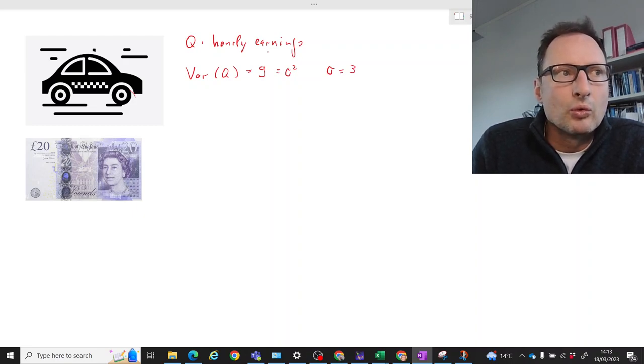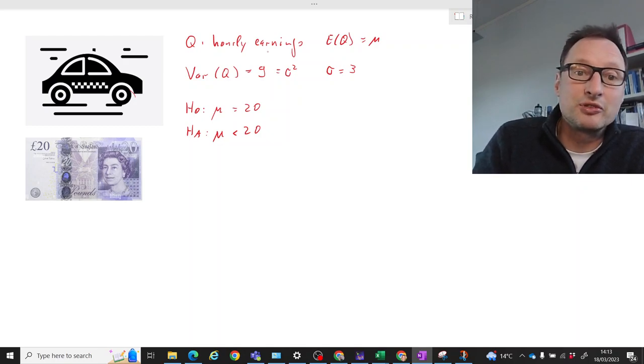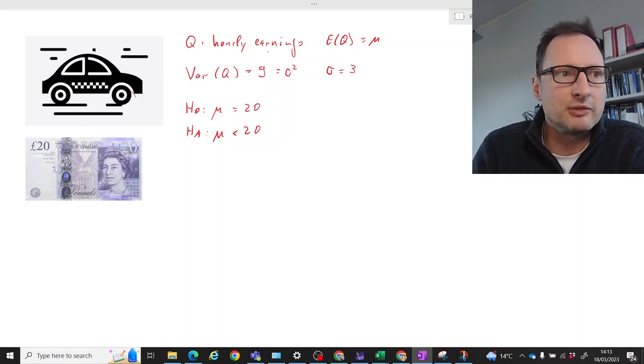So what you now want to do is you want to test the null hypothesis that mu, the expected value of Q, is equal to 20, and you're particularly concerned that mu may be smaller than 20 because then you fear that your drivers will be leaving you.